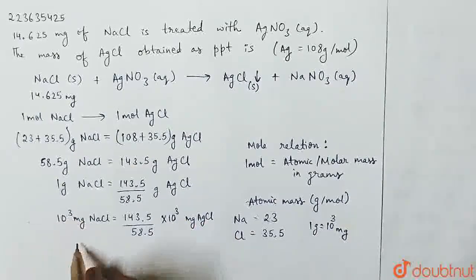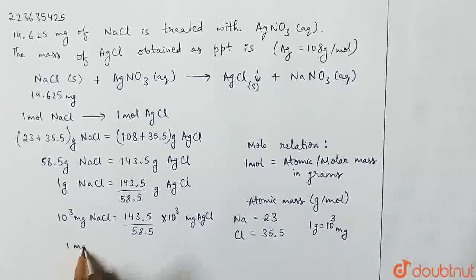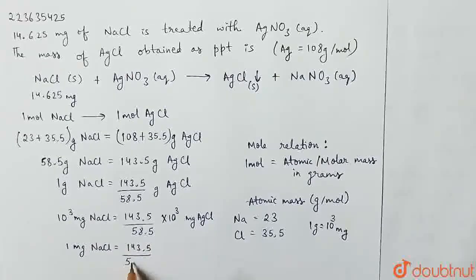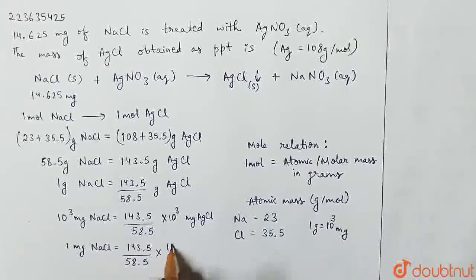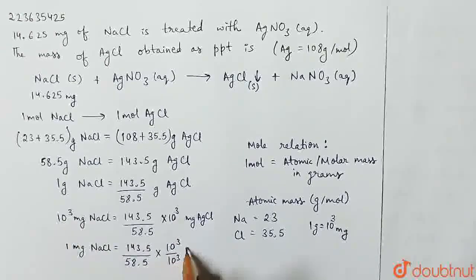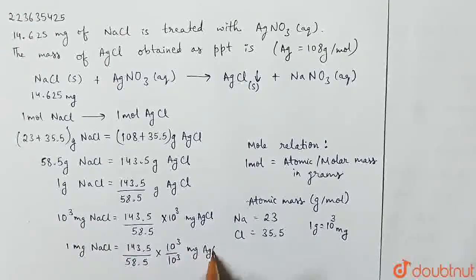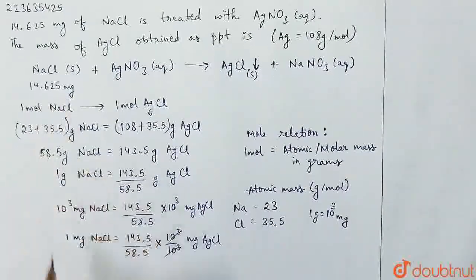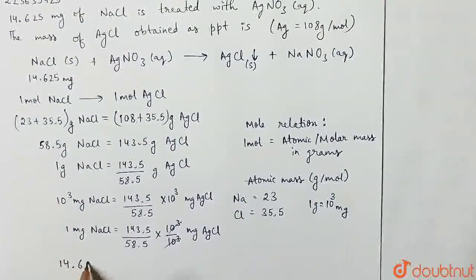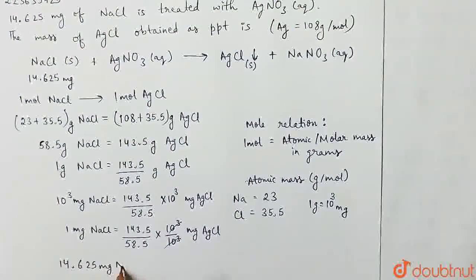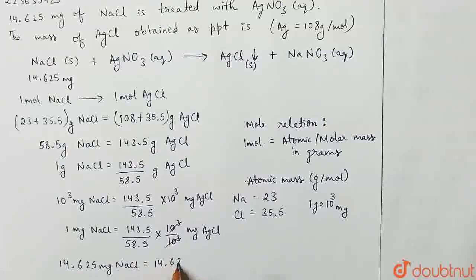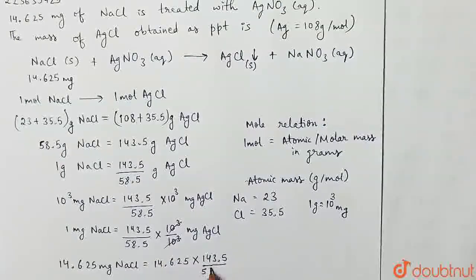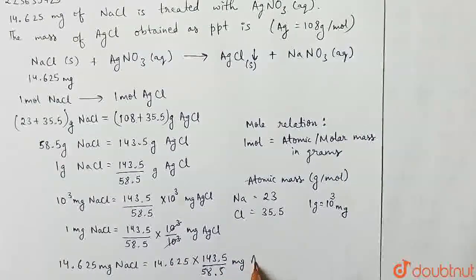So if we have 1 gram, we use 143.5 divided by 58.5 into 10 raised to the power 3 milligrams of AgCl. Here we have used 14.625 mg NaCl, so we will get 14.625 times 143.5 divided by 58.5 mg AgCl.